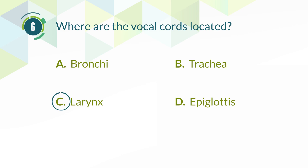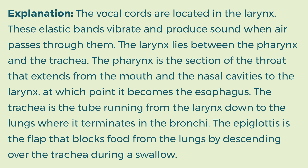The correct answer is C. Larynx. Explanation: The vocal cords are located in the larynx. These elastic bands vibrate and produce sound when air passes through them. The larynx lies between the pharynx and the trachea. The pharynx is the section of the throat that extends from the mouth and the nasal cavities to the larynx, at which point it becomes the esophagus. The trachea is the tube running from the larynx down to the lungs, where it terminates in the bronchi. The epiglottis is the flap that blocks food from the lungs by descending over the trachea during a swallow.